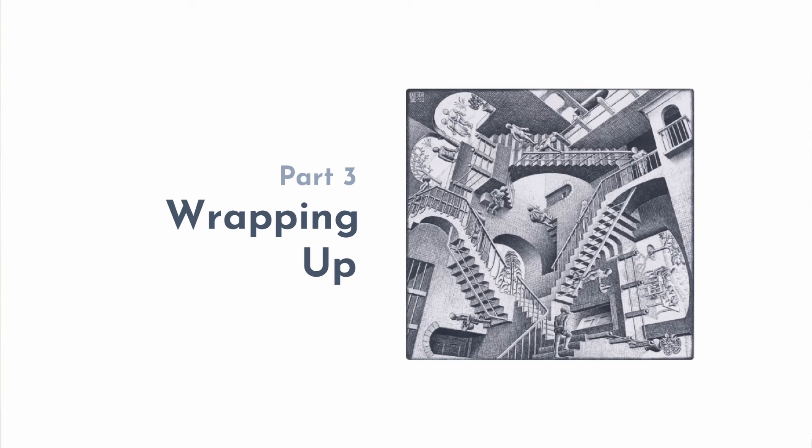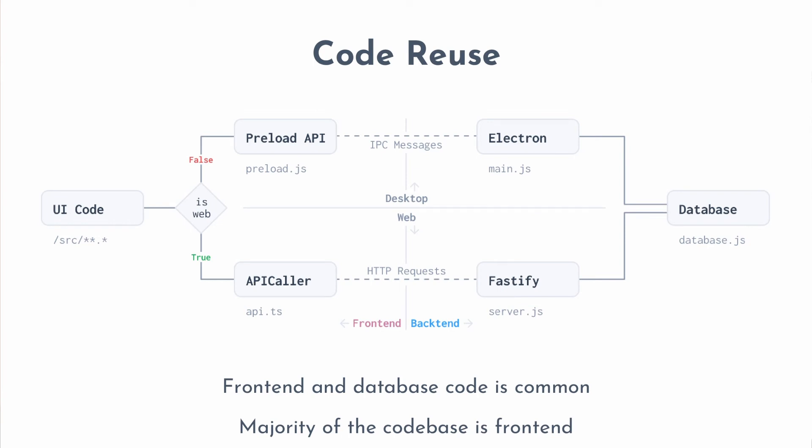Part three is basically wrapping up. Between both sides — whether you're running on desktop or web — only the connecting code, the central rectangle you can see, is platform-specific. That tends to be very little compared to the UI code. In most apps, UI code tends to be quite a lot. Frappe Books has a lot of UI code, so that entire thing can be reused, and you're basically targeting multiple platforms.